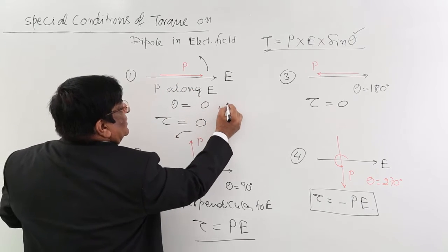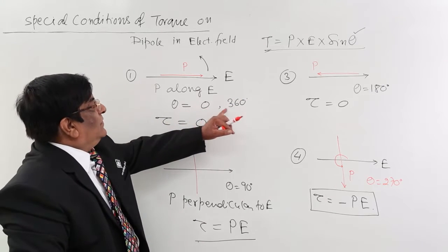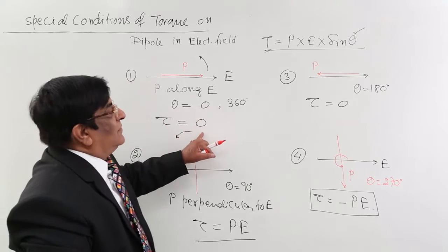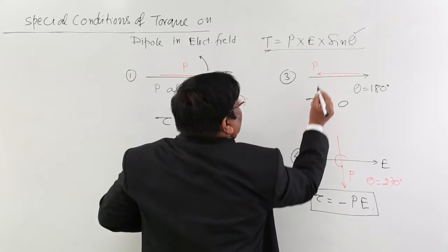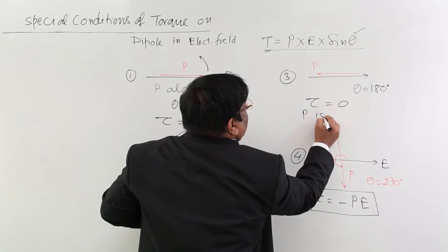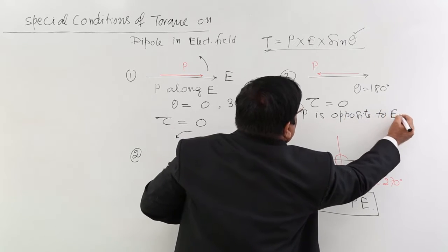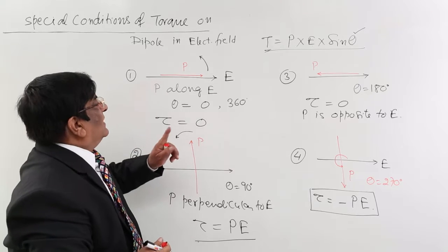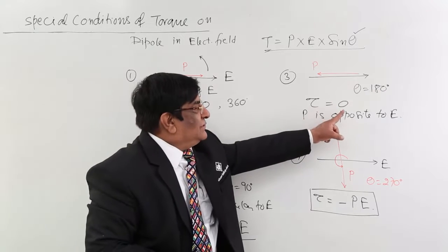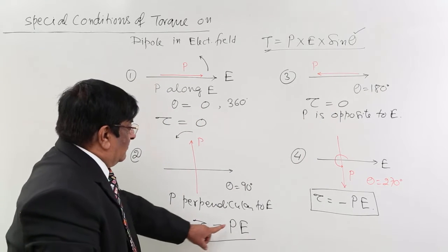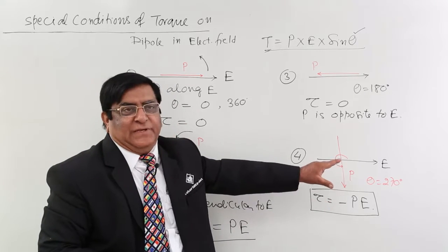So when theta is equal to 0 or 360, torque is 0. When theta is 180, torque is also 0, and here P is opposite to E. There are conditions when torque is 0, when torque is plus PE, and when torque is minus PE. These are the four special conditions.